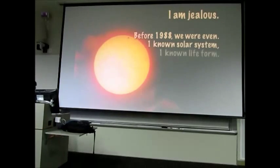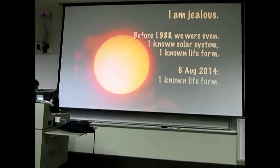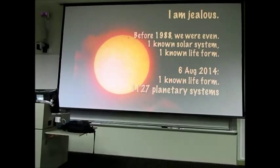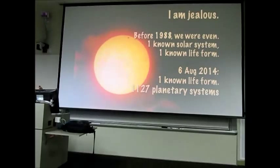There was one known solar system and there was one known life form. You couldn't do comparative work on solar systems. You couldn't do comparative work on life. But as of last night, I didn't update since last night, sorry, there is still only one known life form. But there are 1,127 planetary systems known. Can you imagine if I could stand up here and say I know of 1,127 different life forms, and two-thirds of them do this and one-third of them do this and some of them do that. It would be an incredibly rich, exciting talk. But we don't have that. We still have this one.